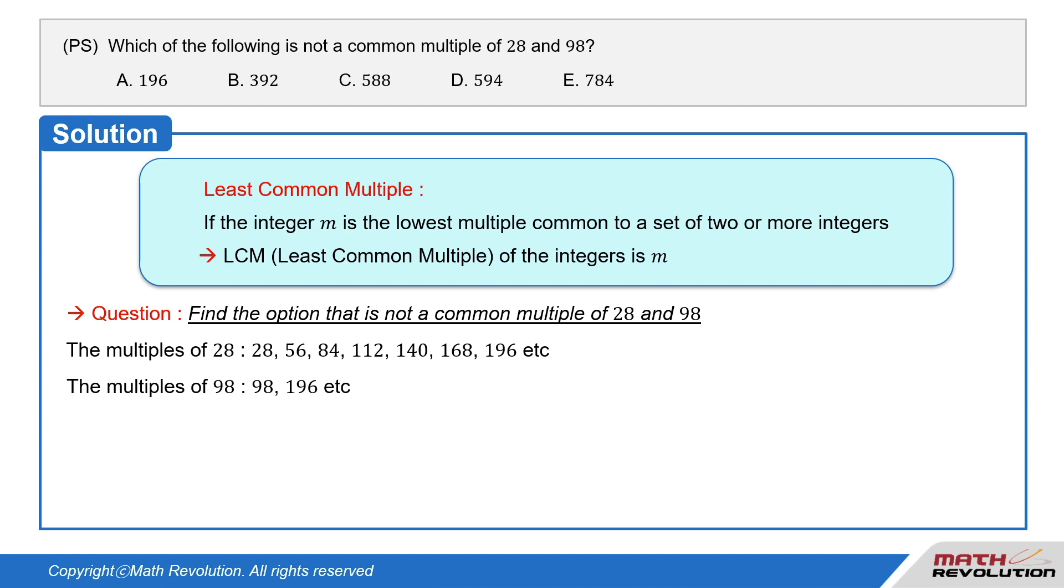And multiples of 98 are 98, 196, and so on. Thus, the common multiples of 28 and 98 will be multiples of 196.